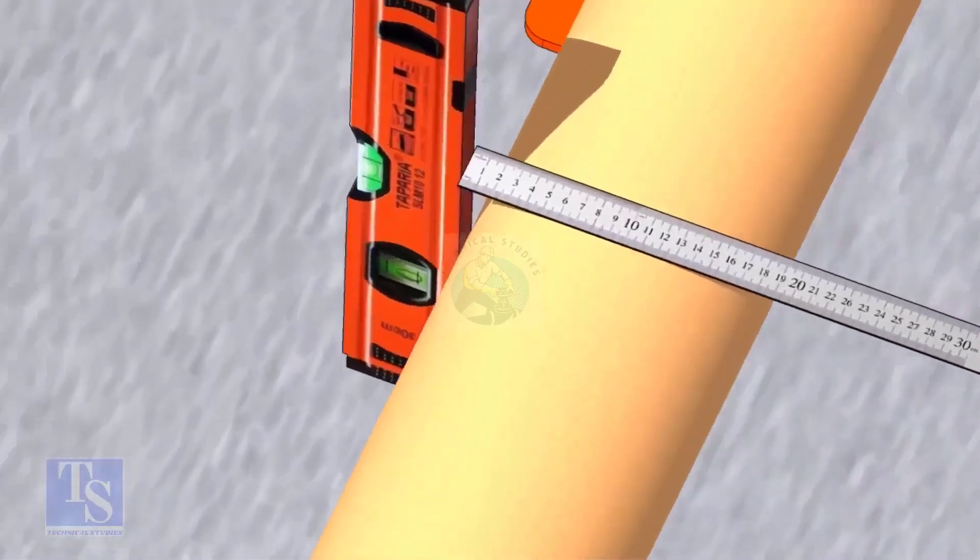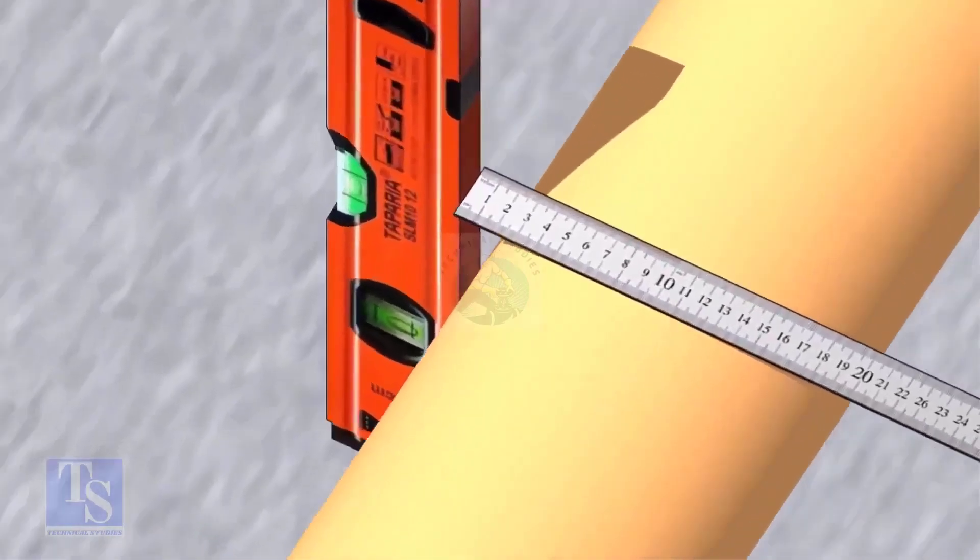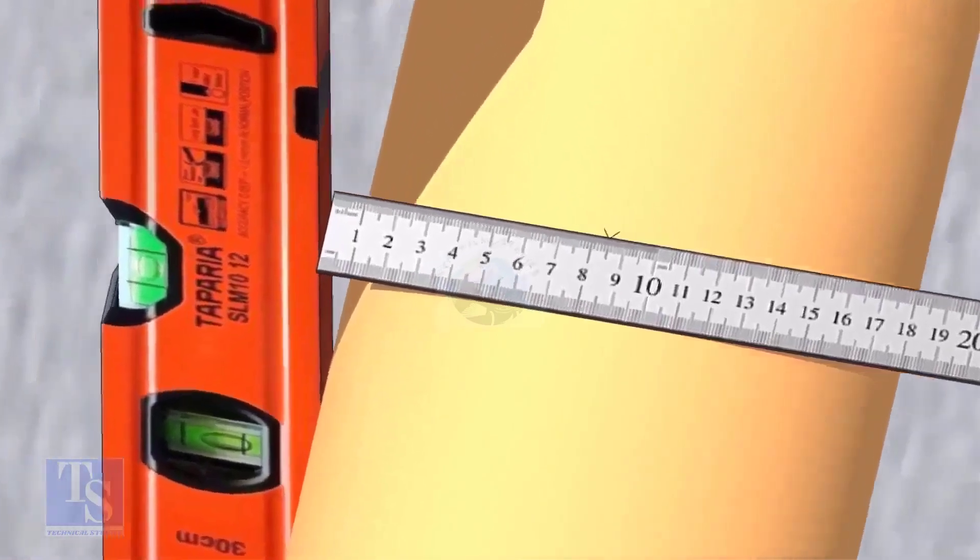OD of a 6 inch pipe is 168mm, so mark the half OD 84mm as shown.